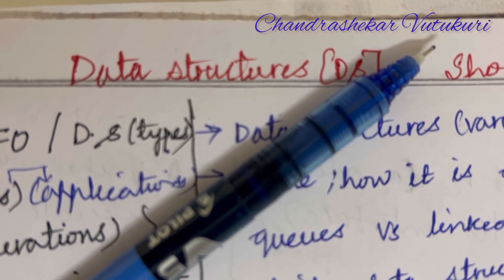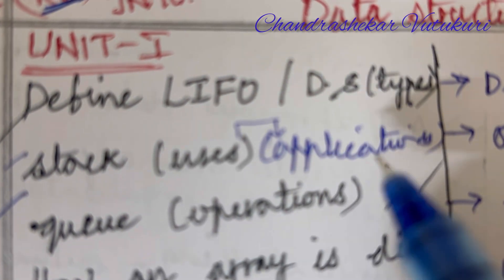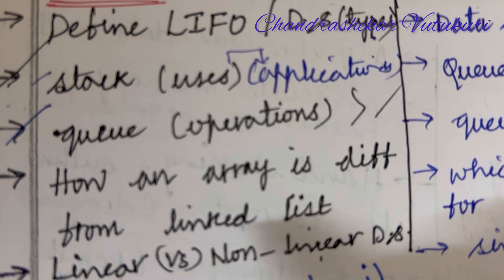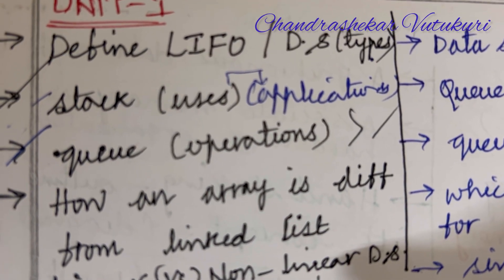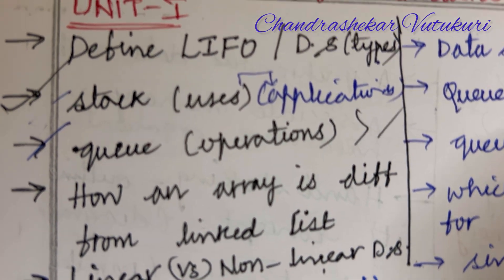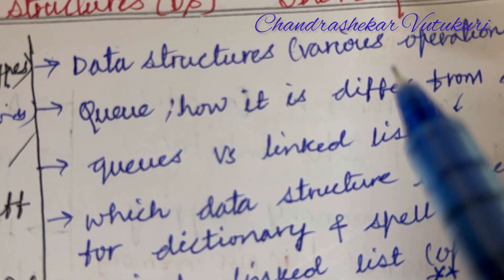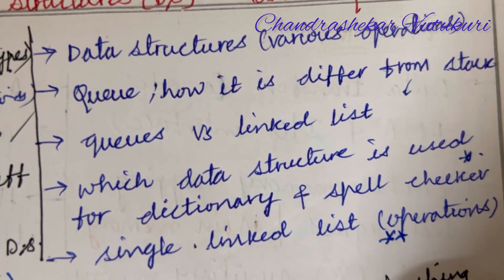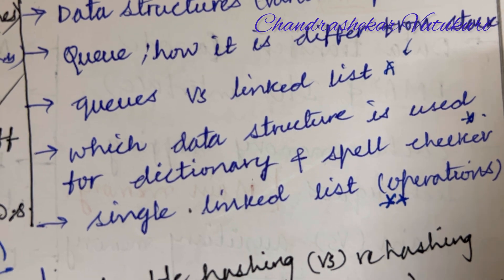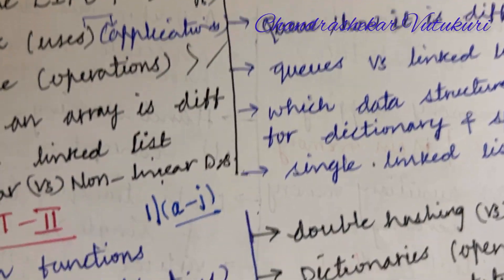For the J NTU H R22 regulation, the short questions will be asked as follows: define LIFO, data types, and different types of data structures; stack uses and applications; queue and its operations; how an array differs from a linked list. These are the topmost questions. Also important: linear versus non-linear data structures, various queue operations, how queue differs from stack, queue versus linked list, which data structure is used for dictionary and spell checker — asked several times — and single linked list and its operations.